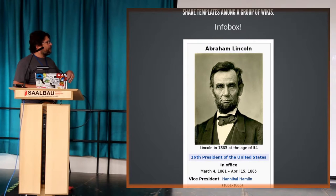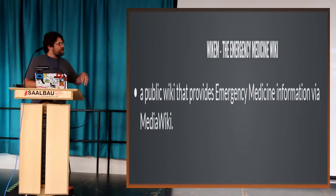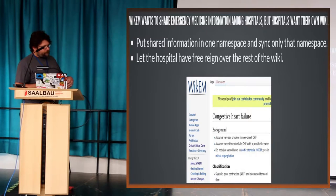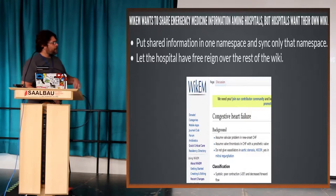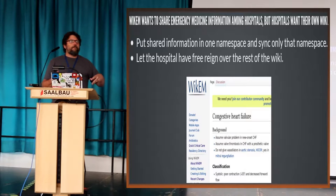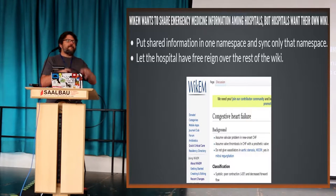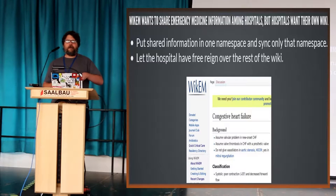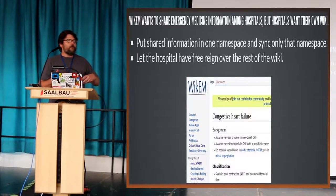There are shared templates across a group of wikis. For example, Wiki EM — emergency medicine — has hospitals using their wiki. But hospitals were putting things like doctors' schedules, particular to their hospital, into the emergency medicine wiki, which they don't want. They want the hospitals to have the emergency medical information — details, procedures, and so on — but they want to share that content out selectively. The idea is to set up an EM namespace that is shared across all the wikis, while the hospital has free reign over the rest of their wiki.